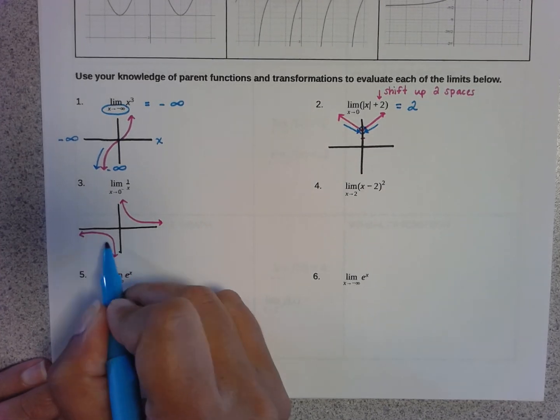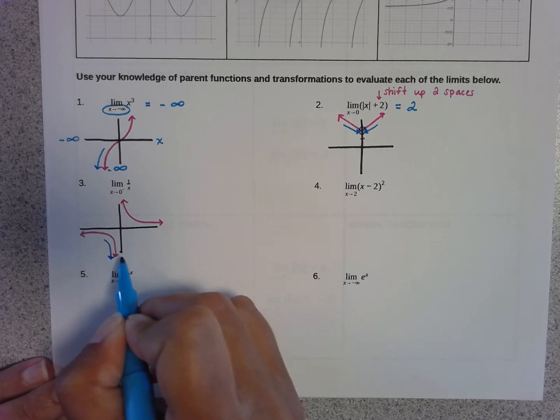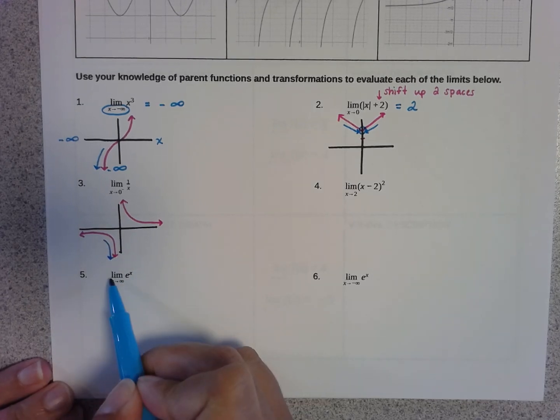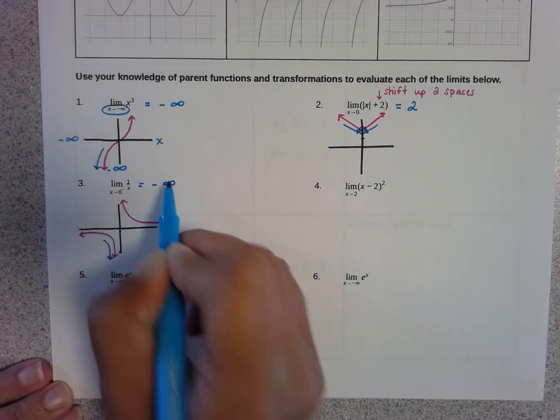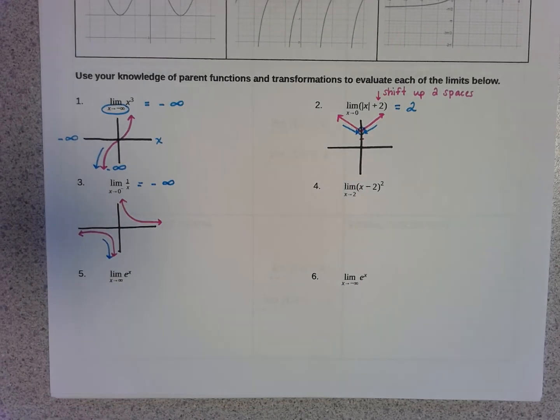So if I approach zero from the left, I'm looking at this side of the graph, the left side approaching zero, I'm going to be going down towards negative infinity in the y values. So my answer is going to be negative infinity.